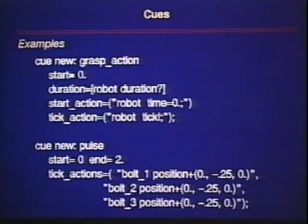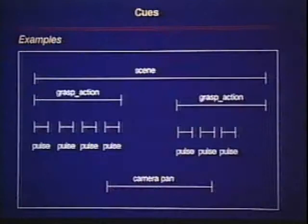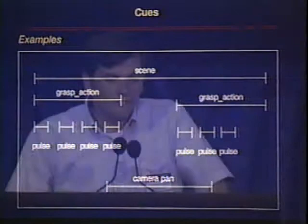In this example, we have the description of the grasp action. Its start action is to set the robot's time to zero, and for each tick while it's active, it sends a tick to the robot. Here is a little timeline of the type of scene that can be set up, with cues that can overlap since they each have their own clocks.